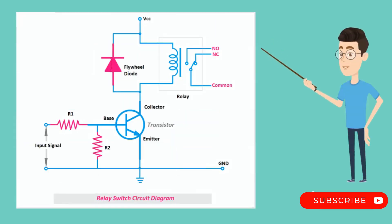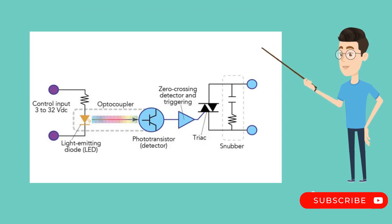Another difference is their power requirements. Magnetic coil relays require a higher voltage to operate, which can lead to a higher energy cost. While solid-state relays, on the other hand, require less energy to operate, which can result in cost savings over time.